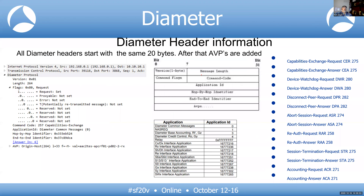Diameter headers start with the same 20 bits, followed by AVPs — Attribute Value Pairs — which carry the actual messages. For example, if the application ID is 225, Wireshark's dissector maps that to a Capability Exchange Request. The dissector simply maps numeric codes to readable message names so you don't have to remember that 282 equals Disconnect Peer, and so on.